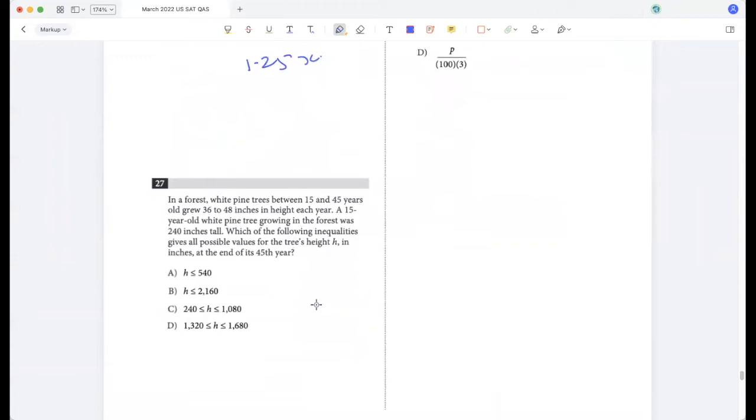In a forest, white pine trees between 15 and 45 years old grew 36 to 48 inches in height each year. A 15 year old white pine tree growing in the forest was 240 inches tall. Which of the following inequalities gives all possible values of the tree's height at the end of its 45th year? Each year it grew between 36 and 48, so after 45 years it would have grown 36 times 45 and 48 times 45.